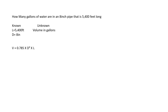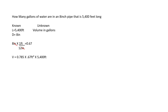We're going to have to convert the 8-inch pipe into feet: 8 inches times 1 foot over 12 inches so that the inches will cancel out. And again, we've rounded this to 0.67 to get rid of the number of the beast. Plugging this into our formula: 0.785 times the diameter of 0.67 feet squared, multiplied by the length of the pipe of 5,400 feet. We get an answer of 1,902.9 cubic feet.